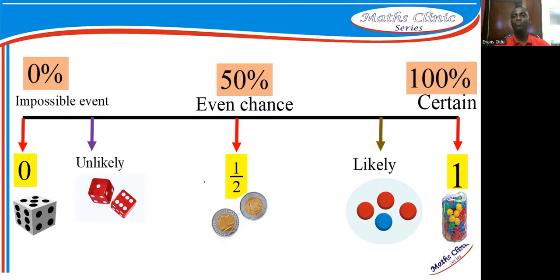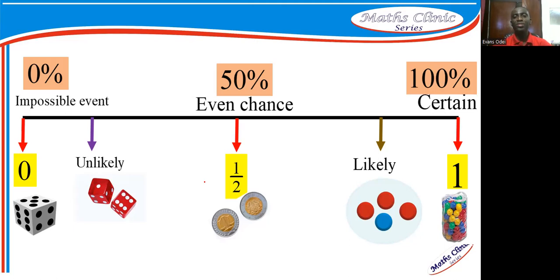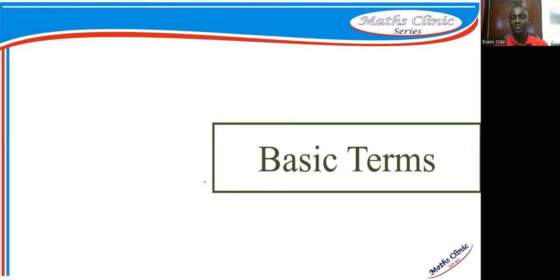You can pause this video and make your notes. Some things you need to write include the definition of probability, which is very important. The reasons why we learn probability are also useful to note. You should also draw the event chart showing the likely, unlikely, even chance, certain, and impossible events in your notebook.